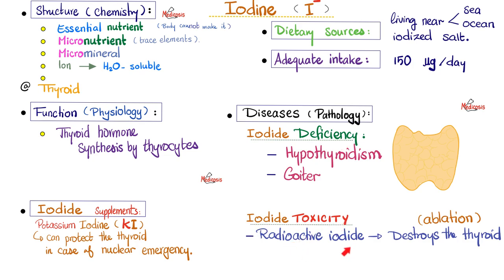Regarding toxicity, radioactive iodide can absolutely annihilate your thyroid gland — this is called thyroid ablation. It is used when thyroid cancer is severe. If there is a nuclear attack nearby, taking potassium iodide supplements will block the receptors on your thyroid gland, so that radioactive emissions cannot bind the thyroid because all receptors are occupied. The drawback is that your thyroid gland will remain silent for a while, causing temporary hypothyroidism — but in the vast majority of cases this will resolve and the thyroid regains its function.